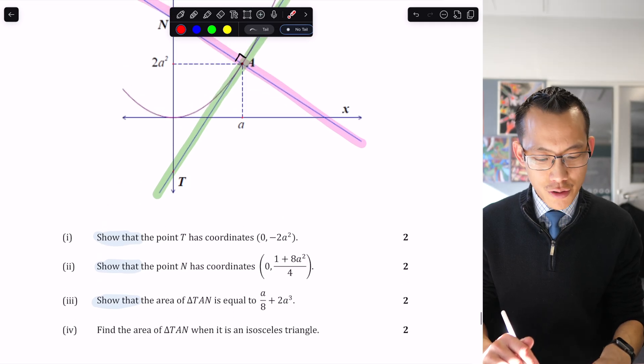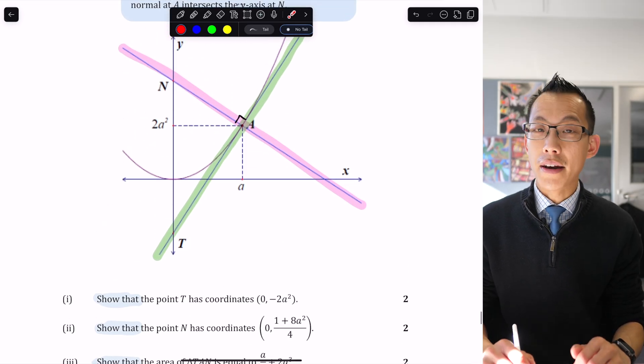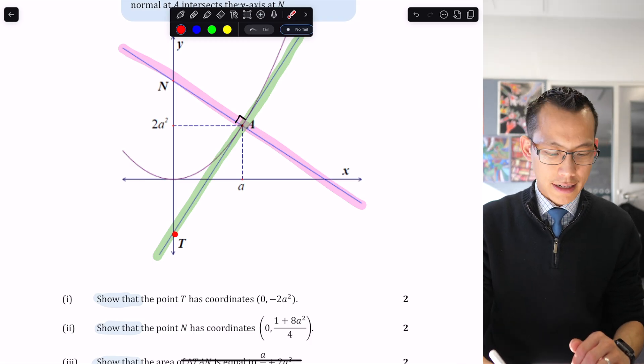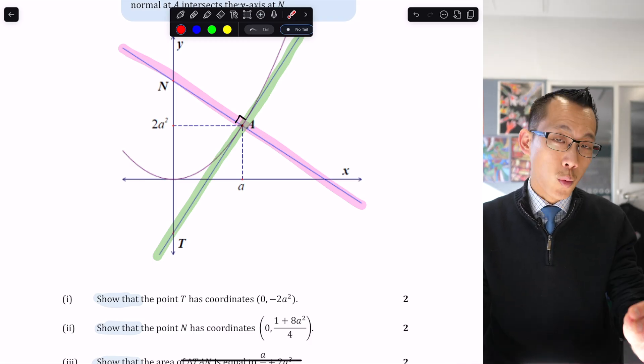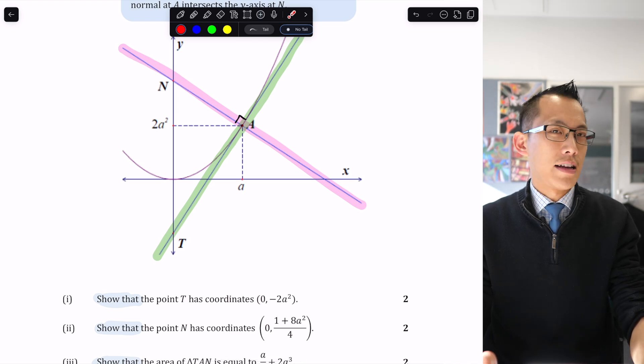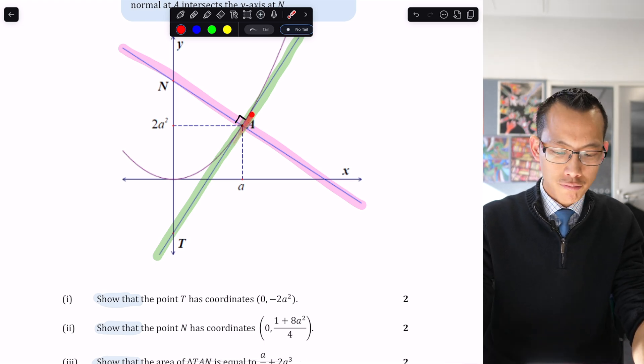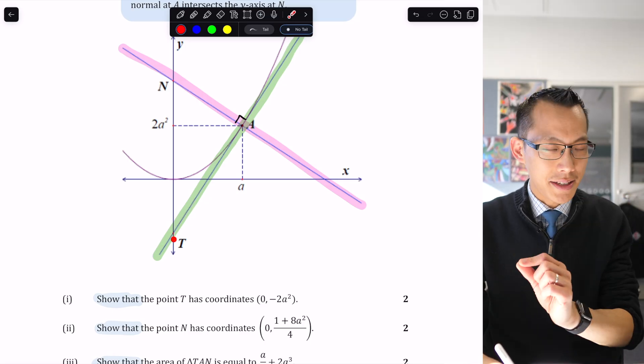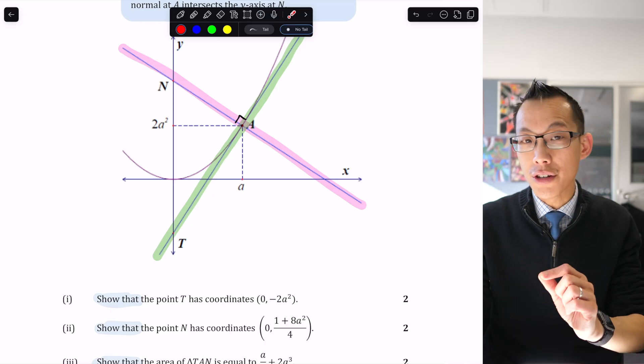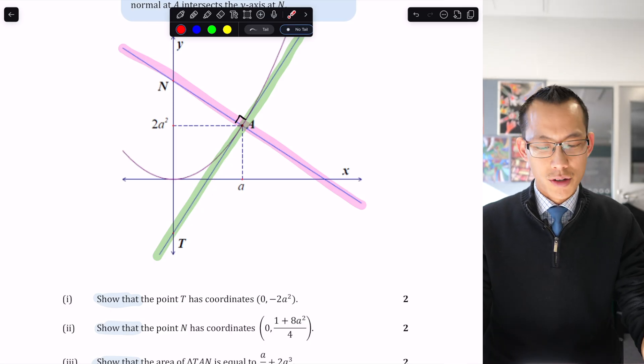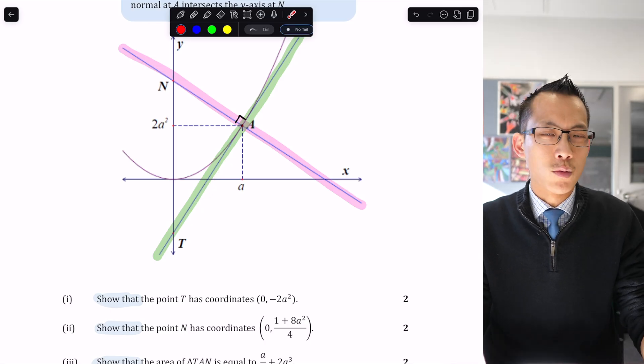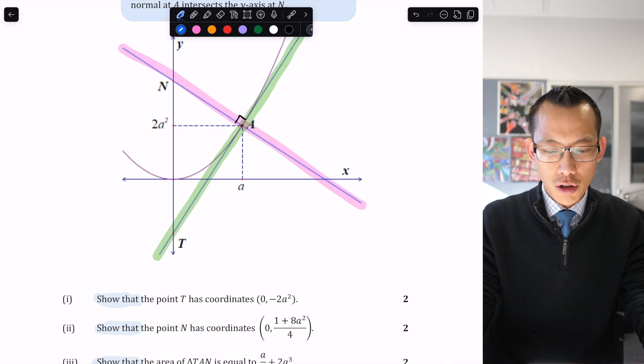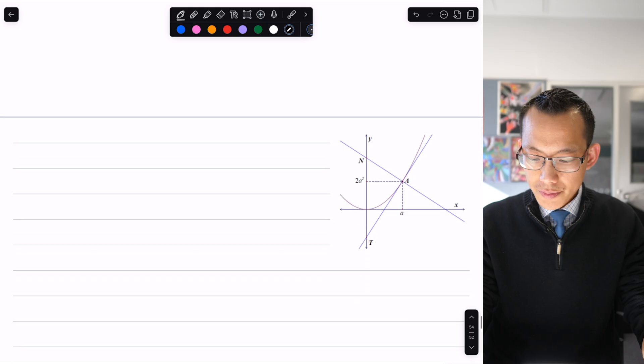This final part is about when triangle TAN is isosceles. Let's start solving. Show that point T has coordinates (0, -2a²). I'm looking for this spot. To find this y-intercept, I need to know the equation of this tangent line.